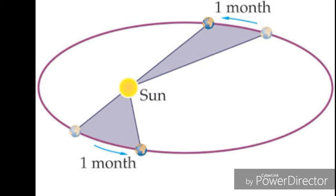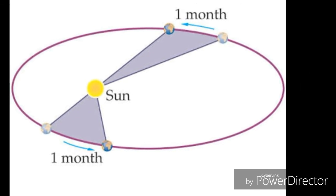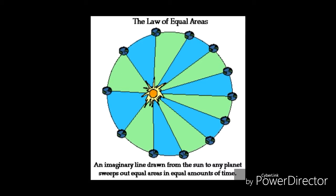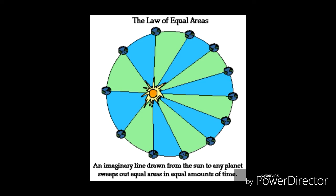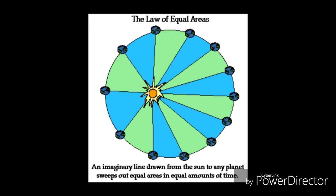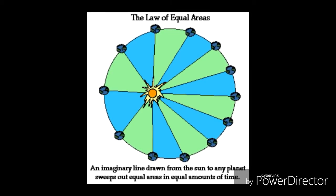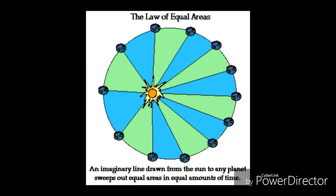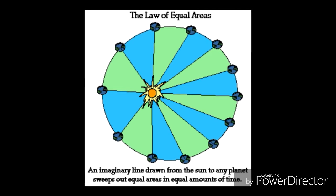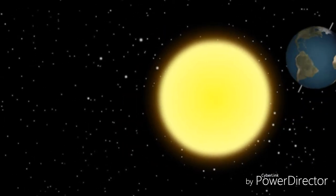For instance, if an imaginary line were drawn from the Earth to the sun, then the area swept out by the line in every 31-day month would be the same. This is depicted in the diagram below. The areas formed when the Earth is closest to the sun can be approximated as a wide but short triangle, whereas the areas formed when the Earth is farthest from the sun can be approximated as a narrow but long triangle. These areas are the same size. Since the base of these triangles is shortest when the Earth is farthest from the sun, the Earth would have to be moving more slowly in order for this imaginary area to be the same size as when the Earth is closest to the sun.